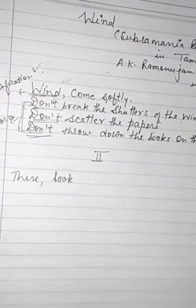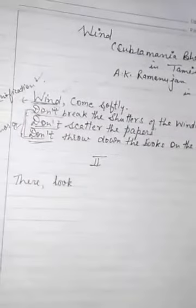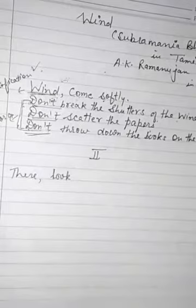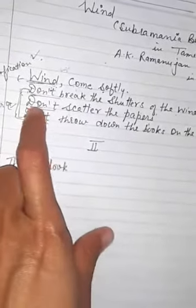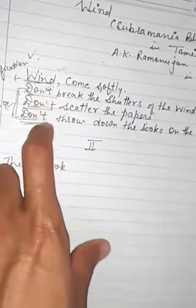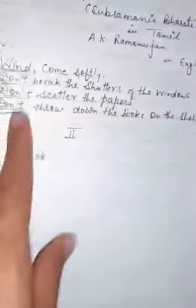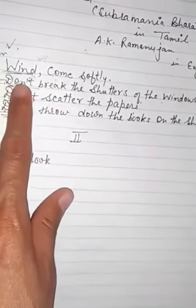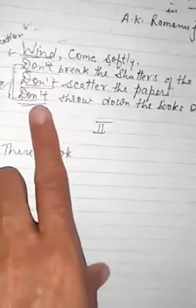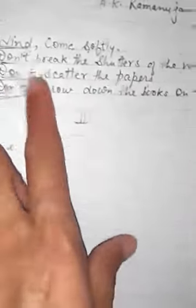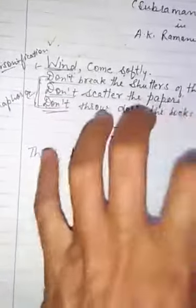Now we will discuss the poetic device. In the next three lines you can see don't, don't, don't. This is called anaphora - when the same word is used at the beginning of consecutive lines. The poet Subramanian Bharati uses anaphora to express his strong urge to the wind to be gentle and kind.